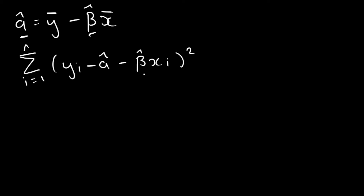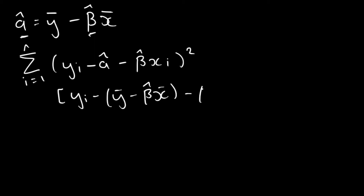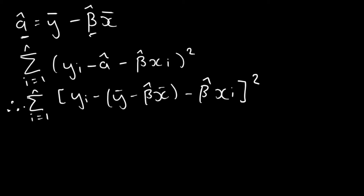Now that we know the value of alpha hat that minimizes the equation, we can plug it in. What we're doing is substituting our value for alpha hat into the sum of squared residuals expression. After plugging it in and doing some algebra, we rearrange the inside of the bracket — combining the y terms and factoring out beta hat, since it's multiplied by two different types of x.